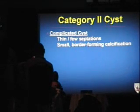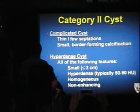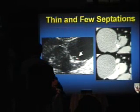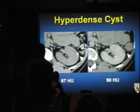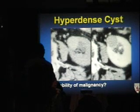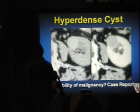Category 2 lesions come in two flavors: a complicated cyst with thin or a few septations and small border-forming calcification, and a hyperdense cyst. A hyperdense cyst must be small (≤3 cm), homogeneously hyperdense even on narrow window settings, typically between 50 and 90 Hounsfield units, and non-enhancing. If it doesn't fulfill all these criteria, you can't call it a hyperdense cyst. There was one case report of a lesion fulfilling all those criteria that turned out to be a clear cell renal cell carcinoma.